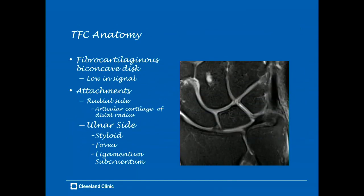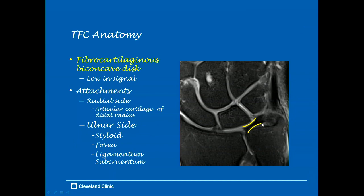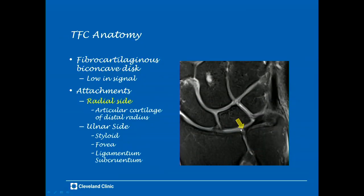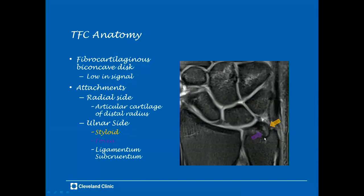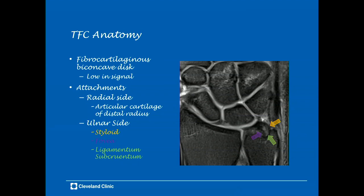A quick review of TFCC anatomy is important to distinguish pathology from normal. The disc is a biconcave fibrocartilaginous disc that should be low signal on all pulse sequences, similar to the meniscus of the knee. Its radial-sided attachment to the distal radial articular cartilage can be high in signal and should not be mistaken as a tear. It has two ulnar-sided attachments — to the ulnar styloid and the ulnar fovea — with a high-signal area in between called the ligamentum subcruentum, composed of fibrovascular tissue, which is normal and shouldn't be mistaken as a tear.